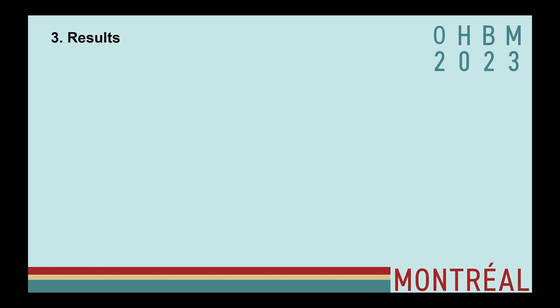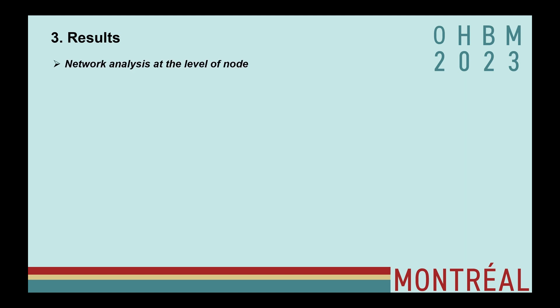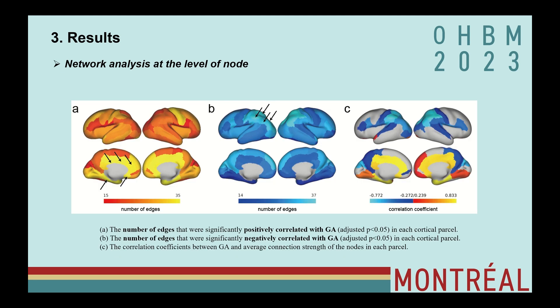We analyzed the developmental pattern of the matrix from the edge, node, and loop level. We first found that the connection strength of contralateral homologous regions decreased with gestational age across the whole brain, especially in the parieto-occipital lobe. At the node level, we found the number of edges with positive GA dependence was higher in the limbic regions, and the number of edges with negative GA dependence was higher in the parieto-occipital regions.